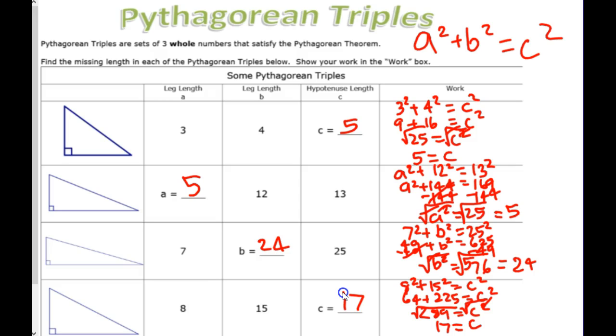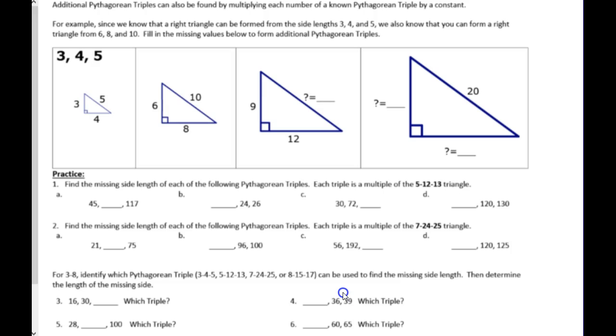If you flip it over, you'll notice not only are there Pythagorean triples, but there are multiples of Pythagorean triples. So, check this out. 3, 4, 5 makes the right triangle.